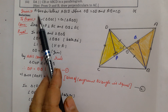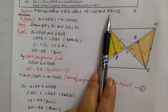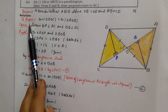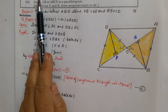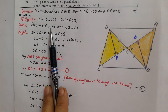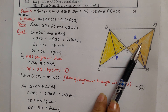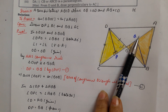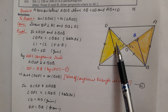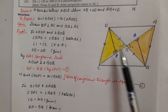So first we write: Quadrilateral ABCD where diagonals intersect at O. OB equals OD and AB equals CD — this is Given. We write what we have To Prove. Then Construction: I have explained that we will draw perpendiculars from D and B making 90-degree angles, and I have told you the reason for doing this.